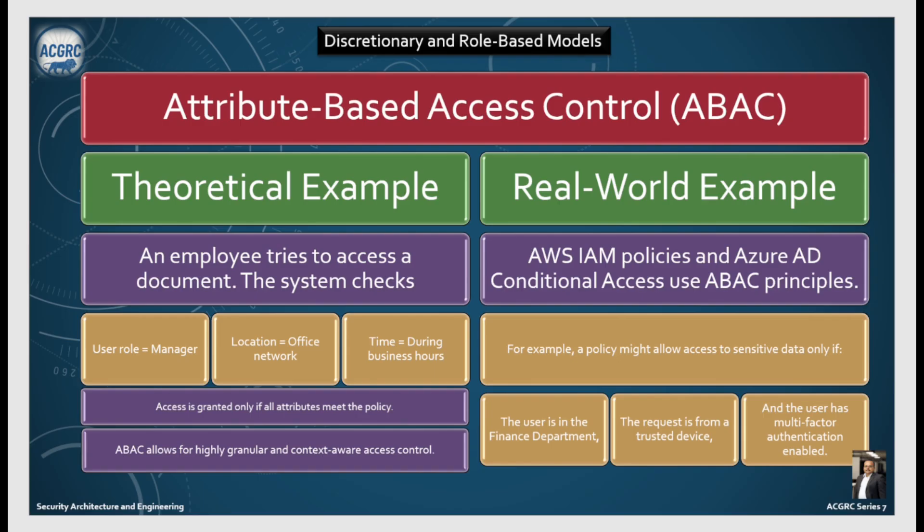A real-world example: AWS IAM policies and Azure AD Conditional Access use the ABAC principle. For example, a policy might allow access to sensitive data only if the user is in the finance department, the request is from a trusted device, and the user has multi-factor authentication enabled.